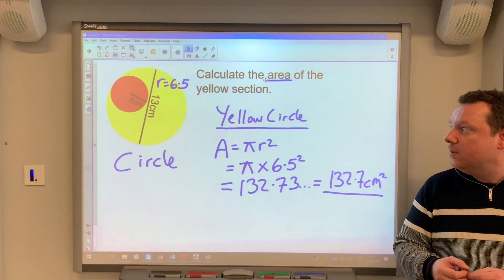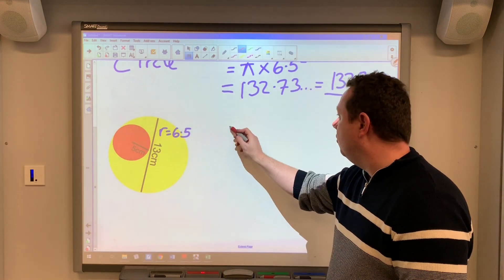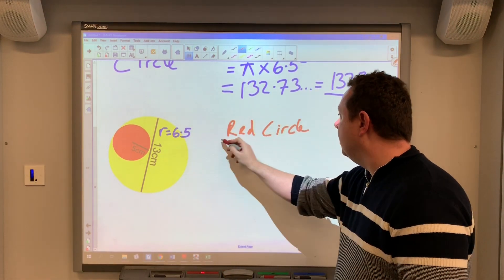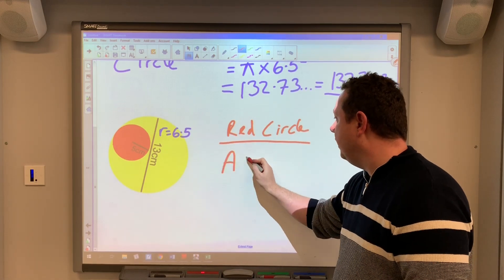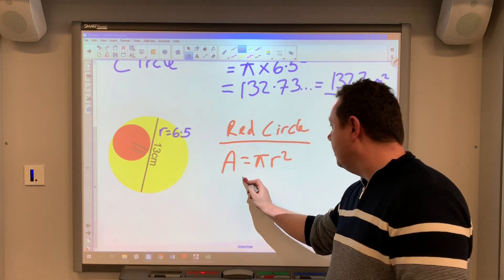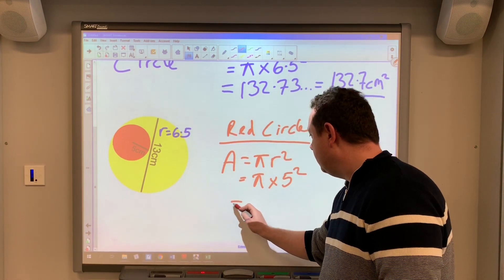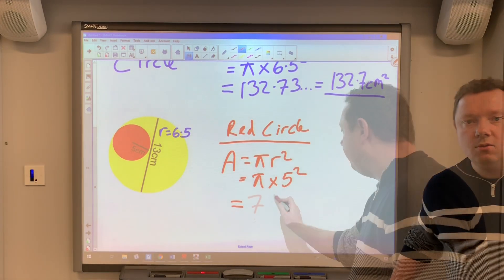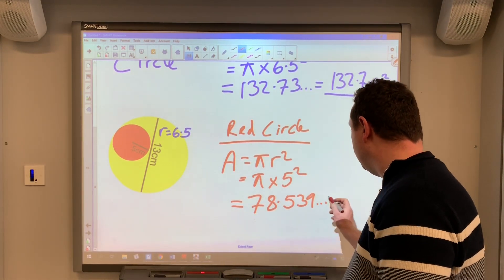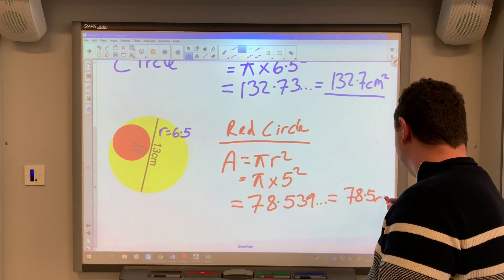So I can go ahead and do the same for the small red circle then. Again, the red circle, area equals pi r squared. I always write down my formula. This time I've got the radius straight away is 5. So it's pi times 5 squared. Get a calculator and work that out, 78.539. Push to one decimal place again, it's just 78.5.